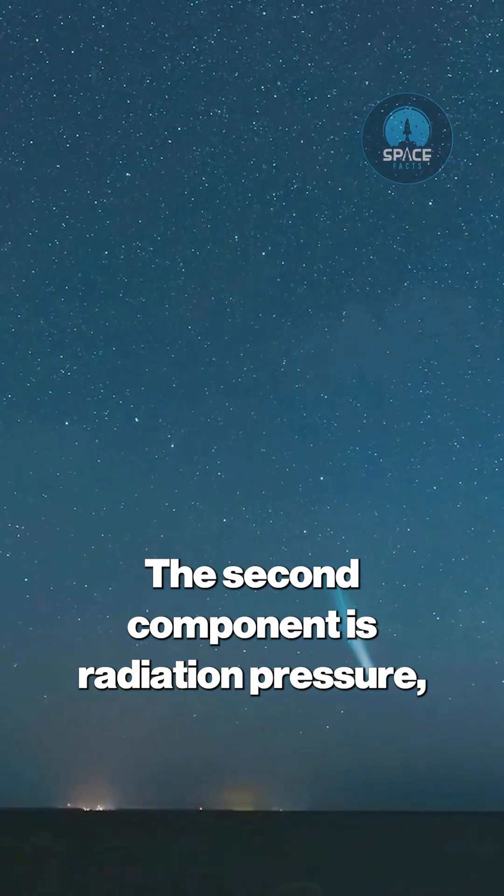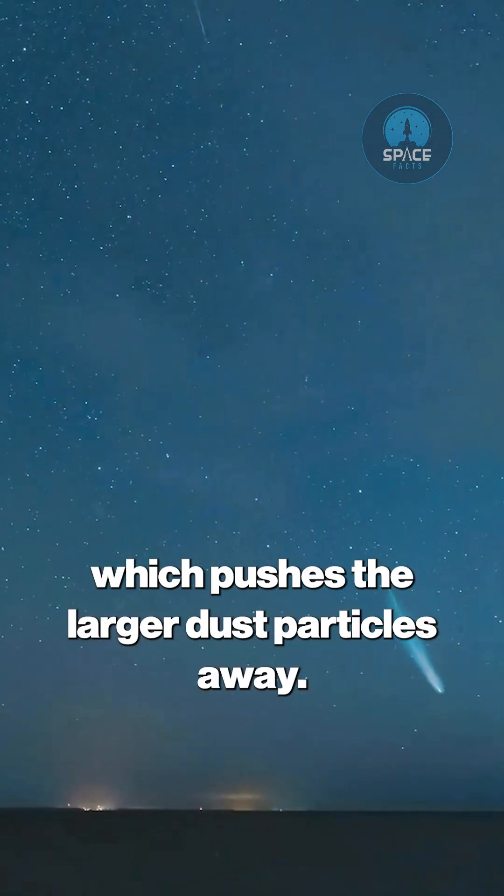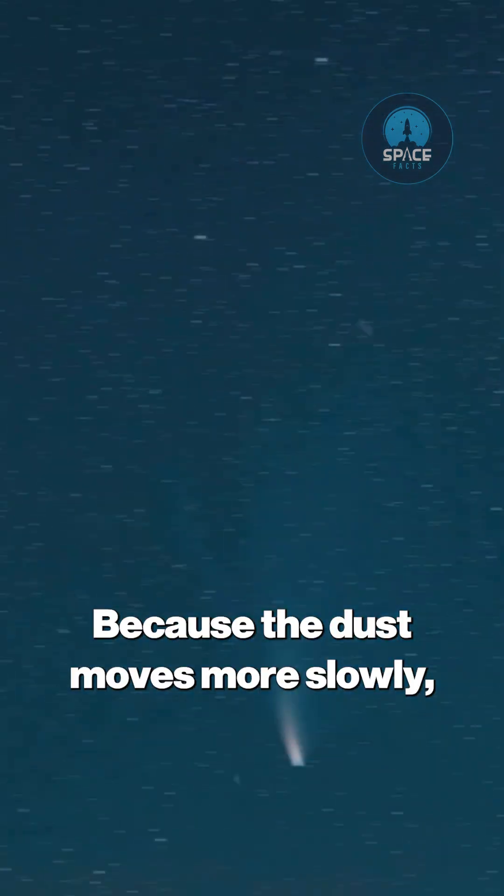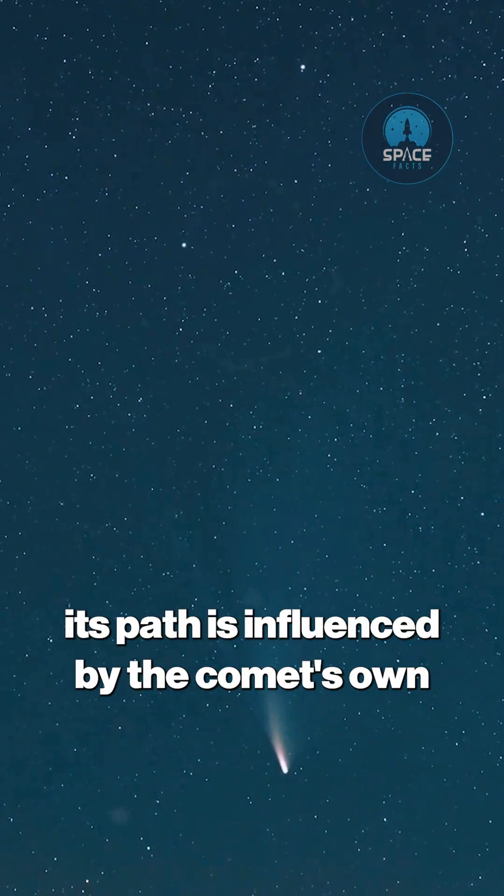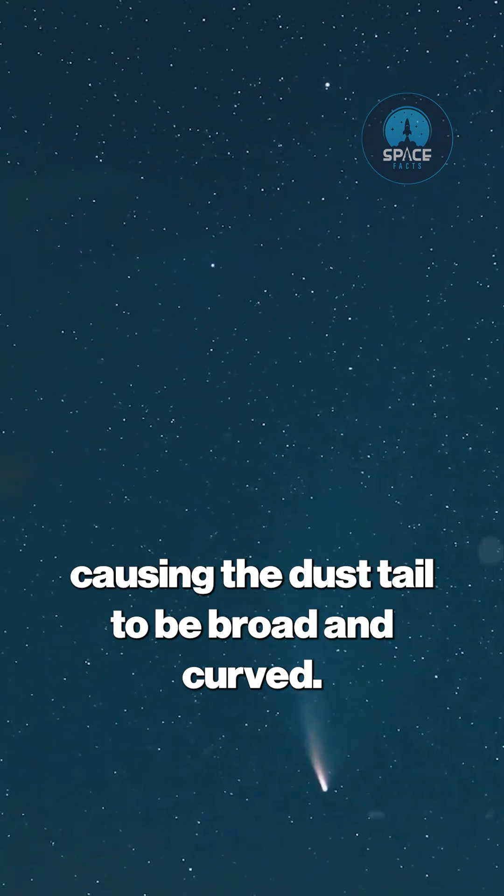The second component is radiation pressure, the gentle but relentless push of photons themselves, which pushes the larger dust particles away. Because the dust moves more slowly, its path is influenced by the comet's own orbital motion, causing the dust tail to be broad and curved.